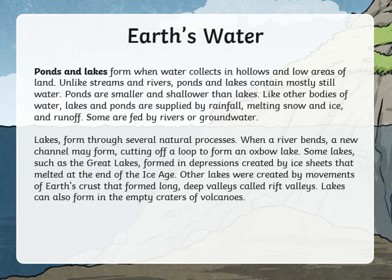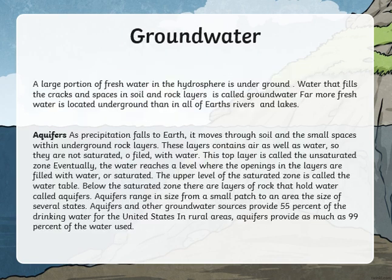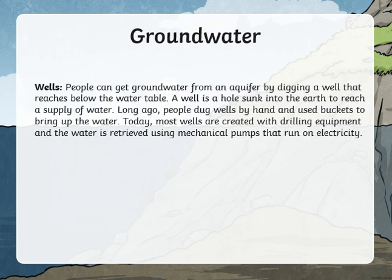Ponds and lakes are also part of surface water since they are found on the surface. As for groundwater, it is the water found underground and it usually fills up soil and rock layers. There are aquifers and wells that are also examples of groundwater that we will be discussing.